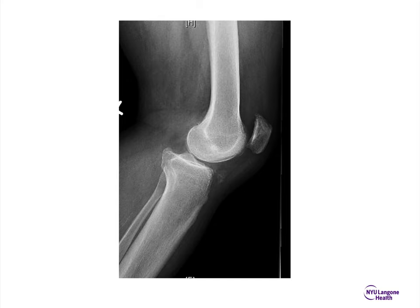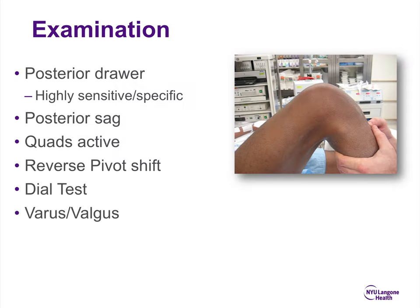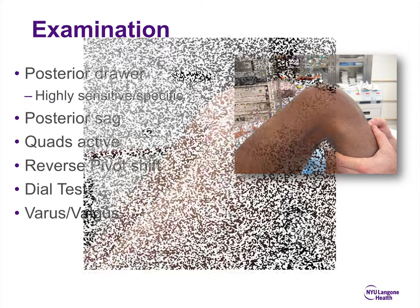This x-ray shows subtle changes clearly demonstrating PCL insufficiency — the knee is flexed to 30 degrees and there is significant posterior translation of the tibia on the femur. You can also see a small fleck sign just off the tibial tubercle, indicative of a distal patellar tendon rupture. In terms of clinical examination, the posterior drawer sign is highly sensitive and specific. Posterior sag is also important — with knees flexed to about 90 degrees, you can see a concavity in one leg compared to the other. The dial test is important for posterolateral or posteromedial insufficiency, along with varus and valgus stress testing at 0 and 30 degrees.